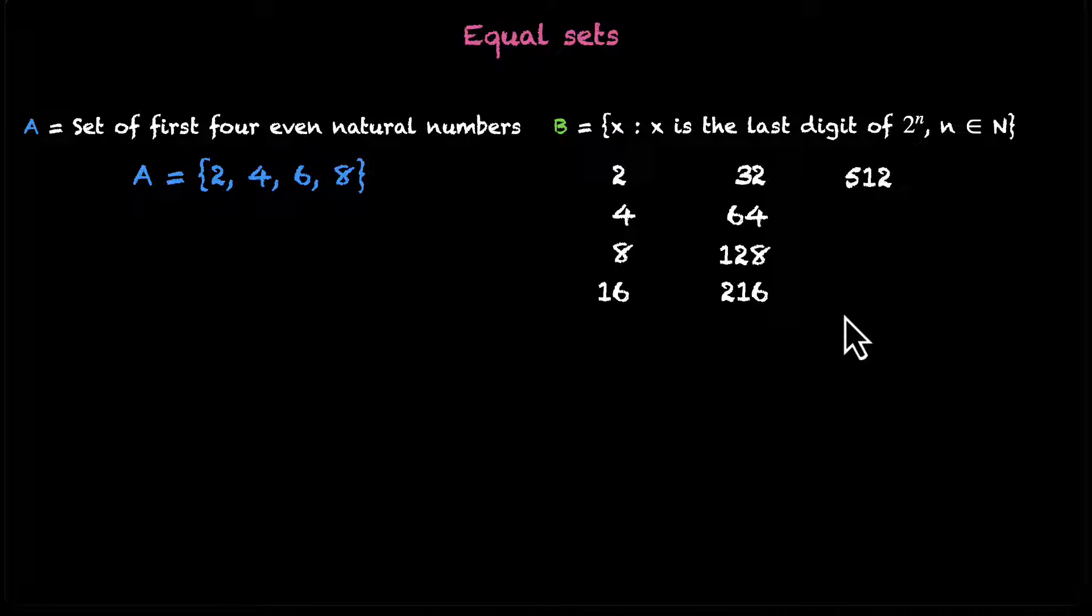Let's take 4 more. We have these 4 powers, 512, 1024, 2048, a very popular game, and 4096. Last digits, 2, 4, 8, 6. And I think you get the point. The pattern will repeat. The last digits will only be 2, 4, 8, and 6.